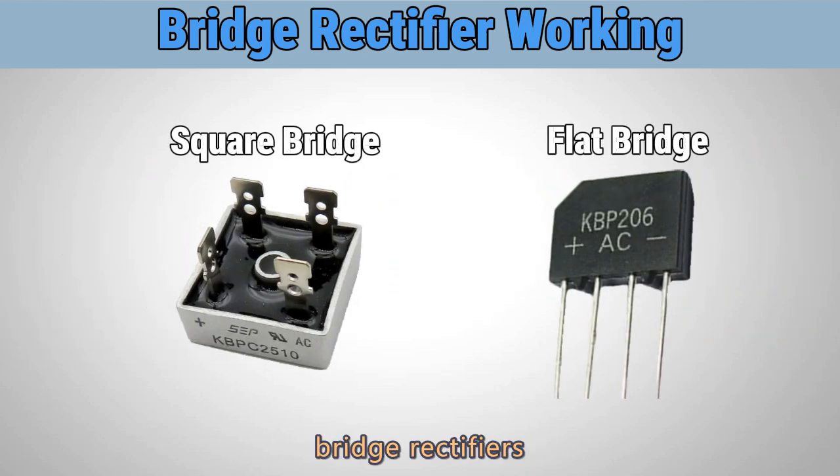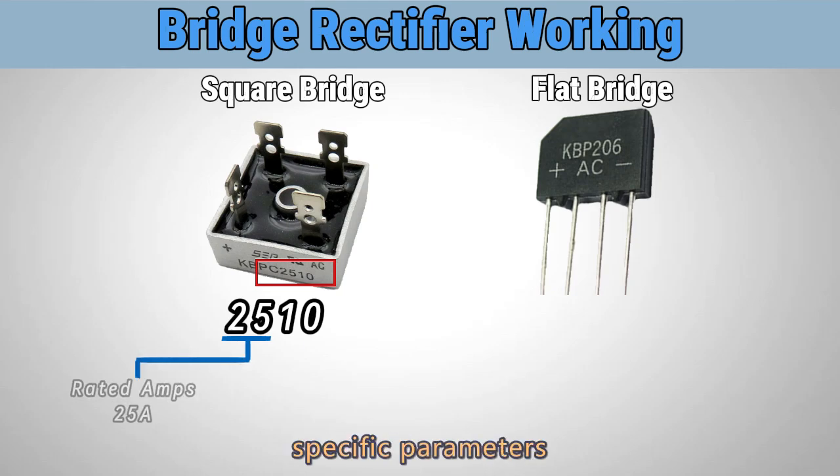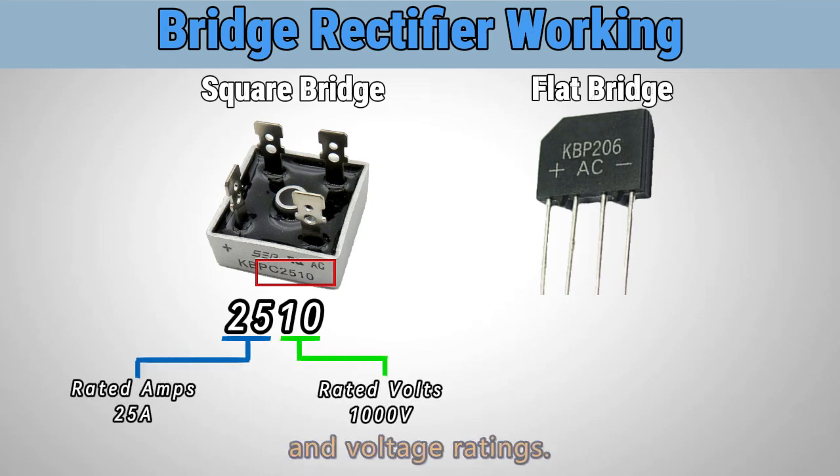Common types of bridge rectifiers include the square bridge and the flat bridge. These bridges have specific parameters indicating their current and voltage ratings.